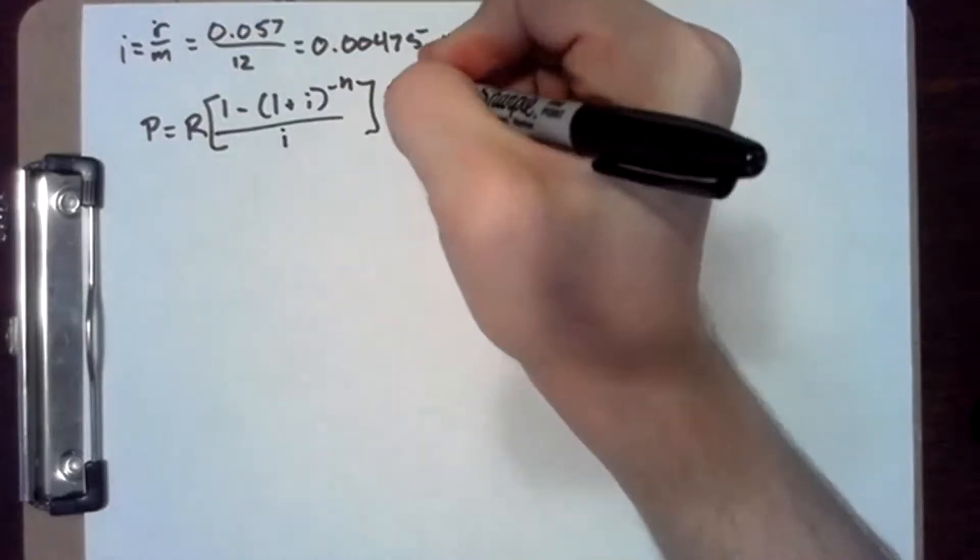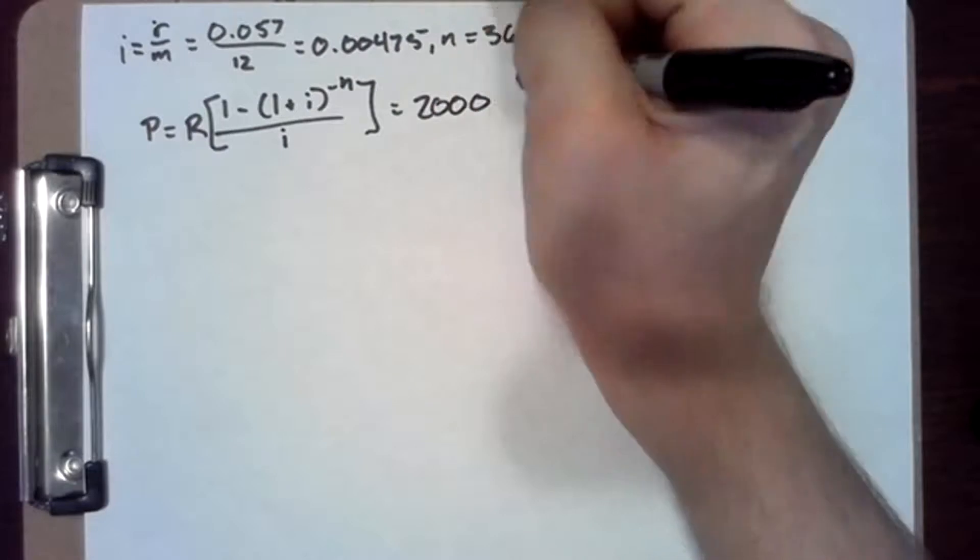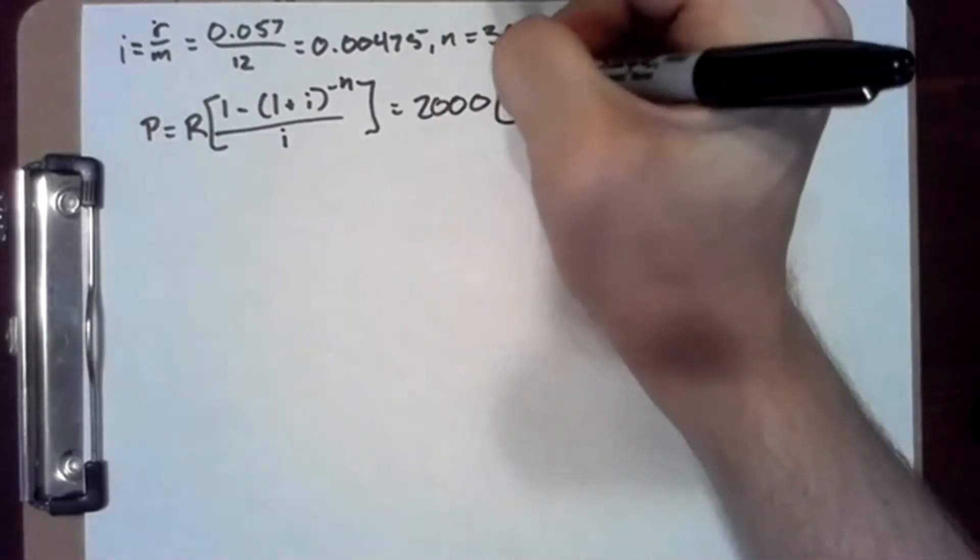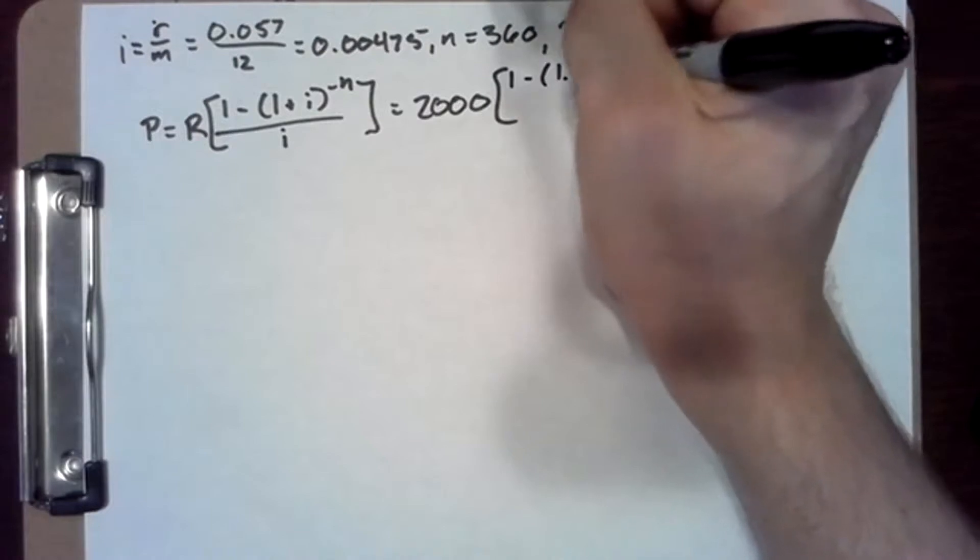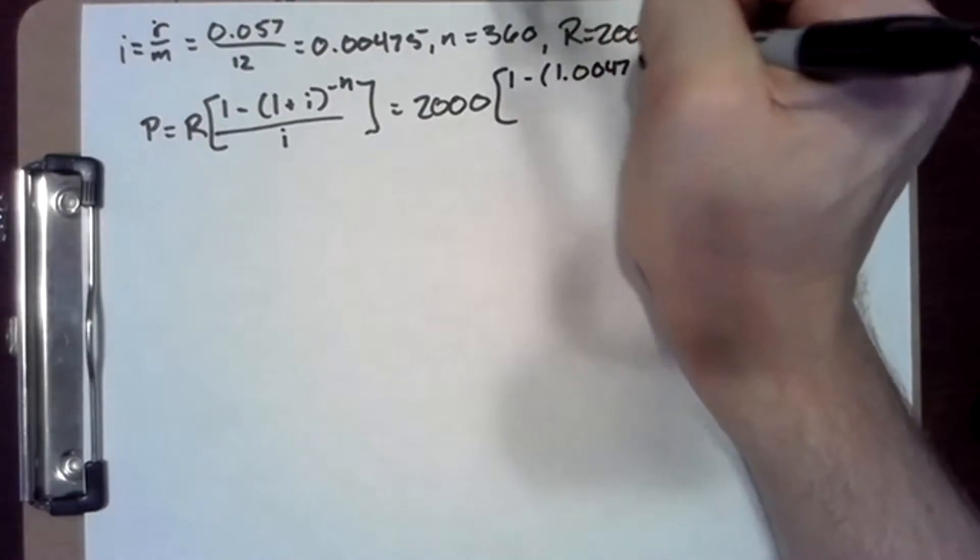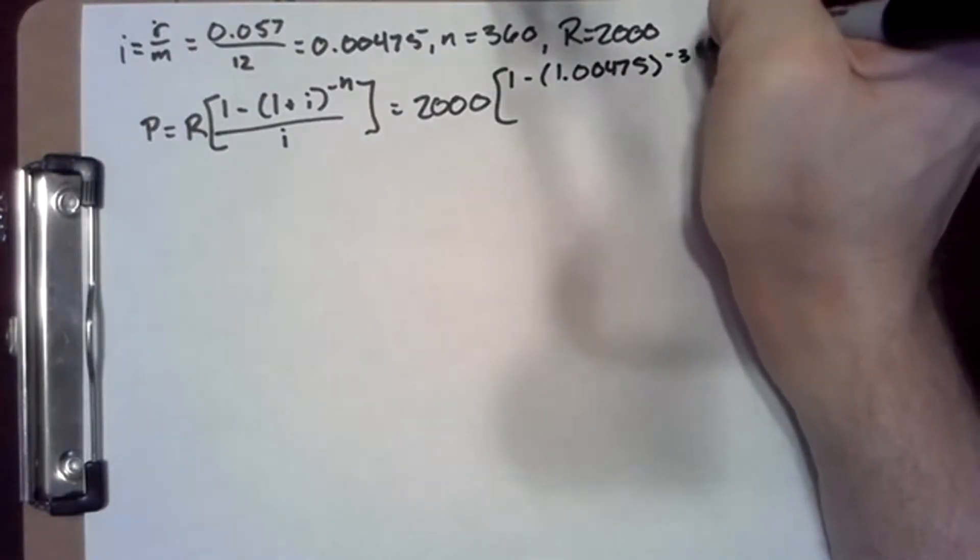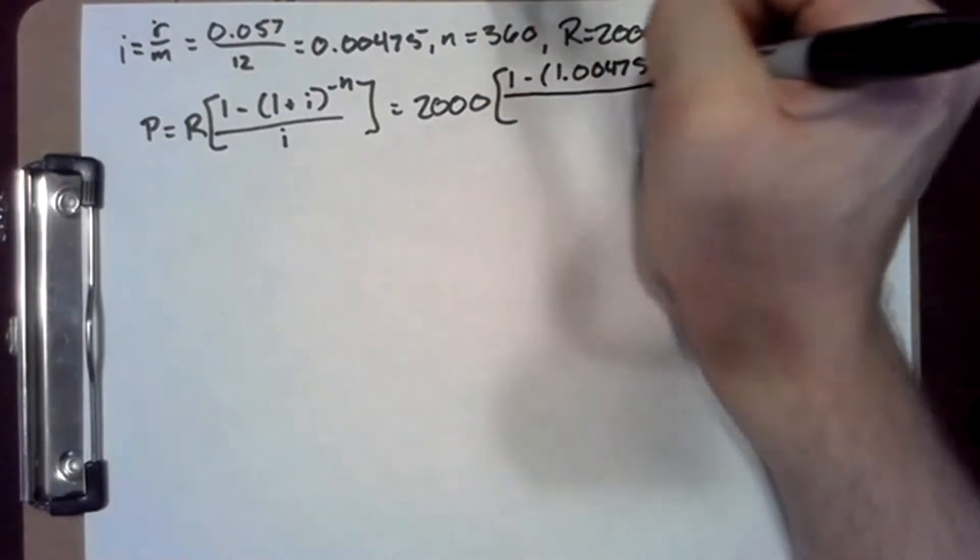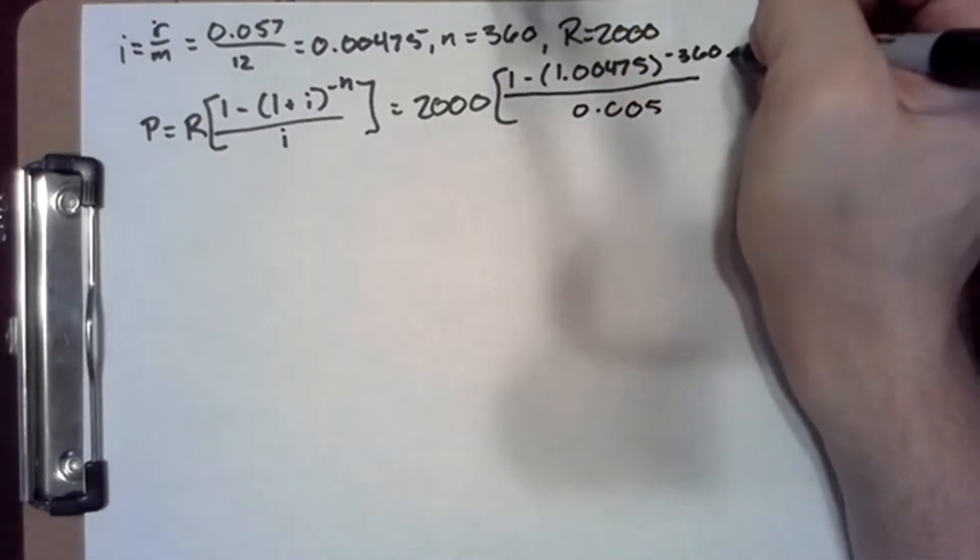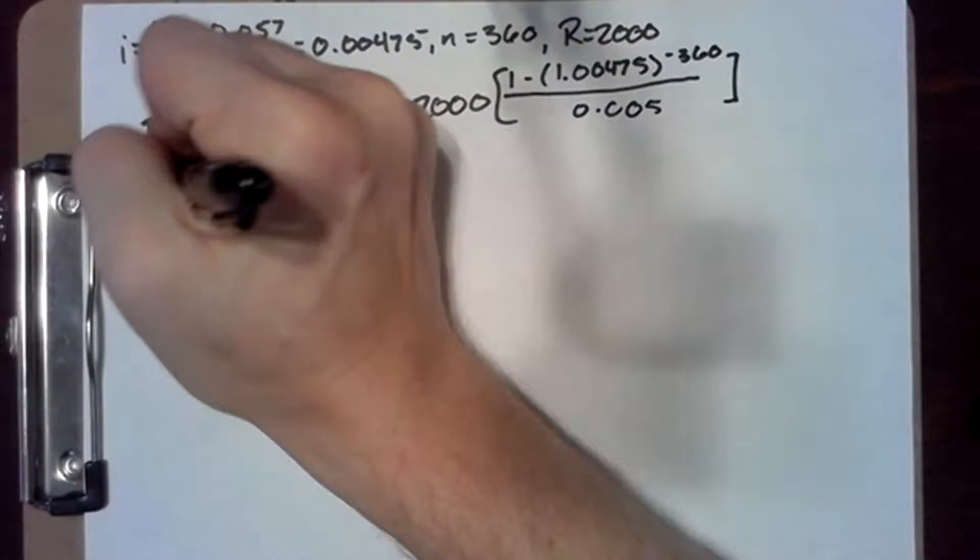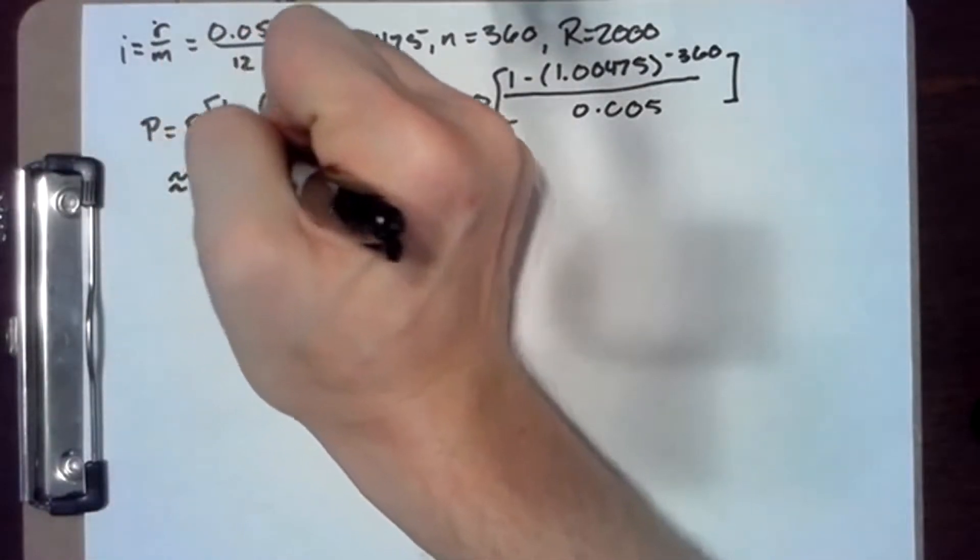Which gives us 2000 times one minus 1.00475 to the negative 360, all over 0.00475, which comes out to approximately $344,589.68.